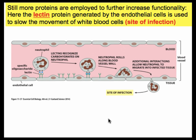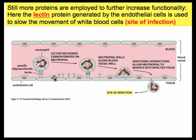White blood cells traveling fast in blood vessels are brought to a standstill so they can leave the vessel and enter tissue at the site of an infection. The infection causes release of chemicals that affect cells lining the blood vessel, which then quickly start expressing additional surface proteins. The surface of white blood cells always has molecules that bind to these surface proteins. Similar to Velcro, these proteins and carbohydrates adhere to each other, slowing down the white blood cell, causing it to roll and then come to a standstill. Once stopped, the cell changes its properties and passes through the vessel lining to enter the site of infection.